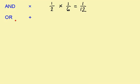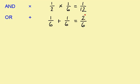An example of an OR question would be: what's the probability of getting a 3 or a 4 when you roll a dice? The probability of getting a 3 is one sixth, and the probability of getting a 4 is one sixth. When we have an OR question, we need to add. One sixth plus one sixth is two sixths. In probability, you don't need to cancel down unless the question asks you to.